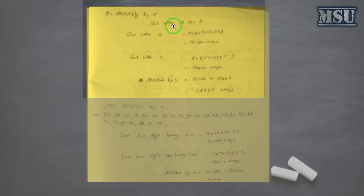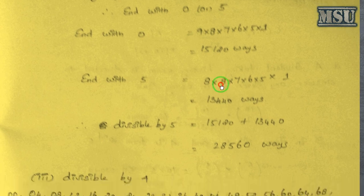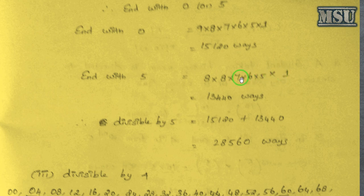Another condition is divisible by 5. Divisible by 5 means it will end with 0 or 5. We already calculated for ending with 0. If it ends with 5, the last digit should be 5. The first digit can't have 5 as well as 0. Here, you can't have this number as well as the last one. For the next digit, you can't have this one, this one, and the last one. So we get this value. Divisible by 5 means either ending with 0 or ending with 5, so here we have this answer.